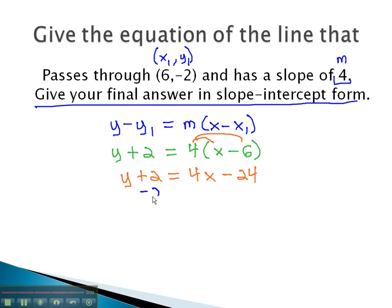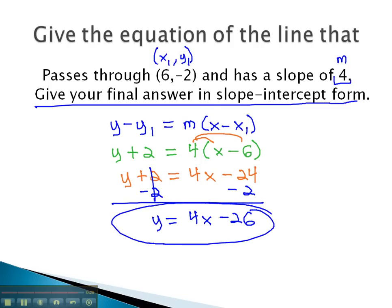Finally, subtracting 2, we'll get the y alone. We now have y equals 4x minus 26. This now is the equation in slope-intercept form that's going to go through the point 6, negative 2, and the slope is 4.